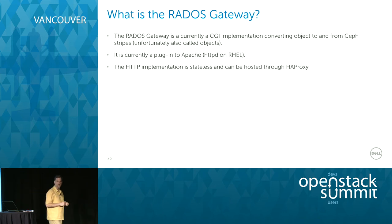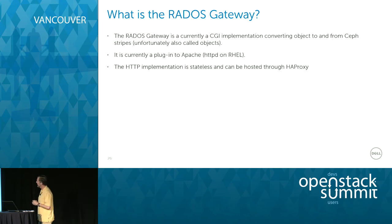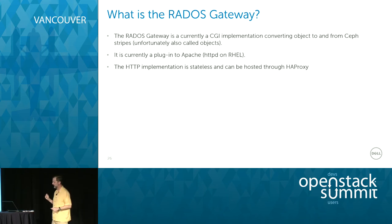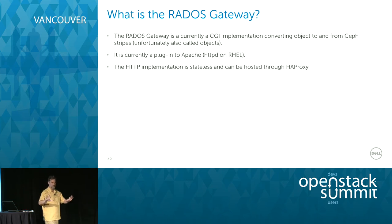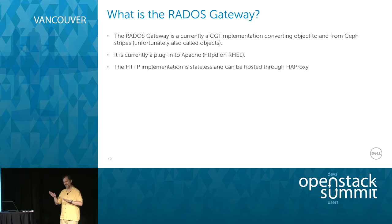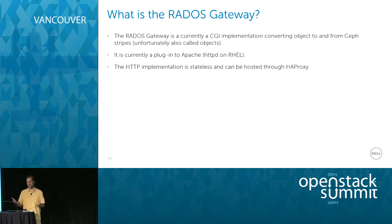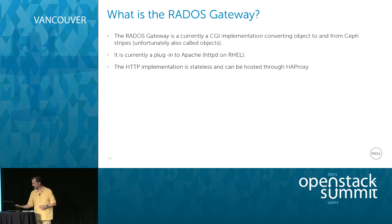There is an object storage gateway implementation in the Ceph project called the RADOS gateway. Today it's a CGI implementation based on HTTPD, and it's stateless — there's really no information the gateway itself retains; all the information it gets is from the underlying Ceph. It also uses the Ceph client. If you want to make it highly available or scalable, you just use HAProxy. And to make the service process itself highly available, you can use something like Pacemaker.